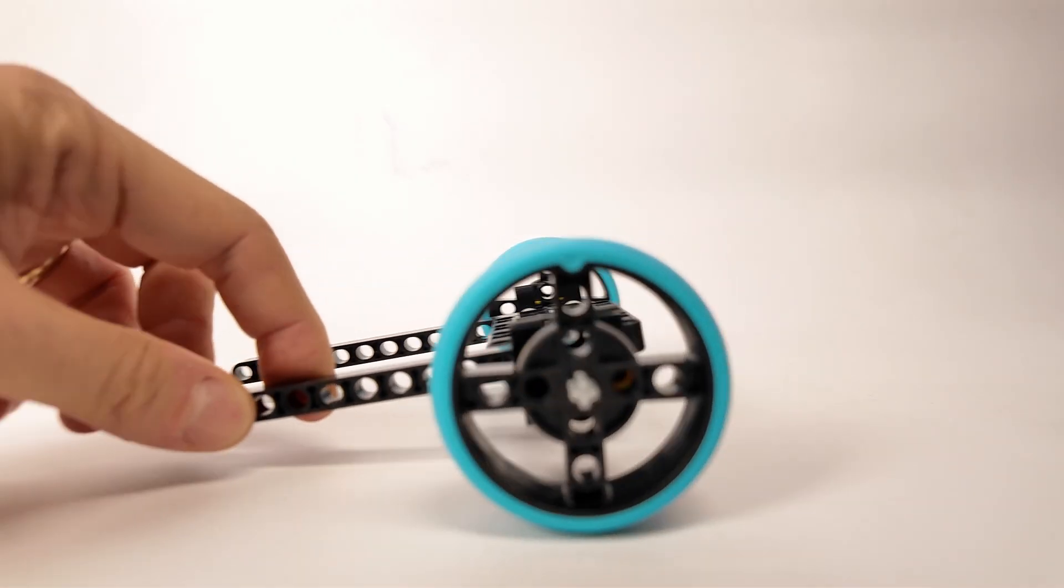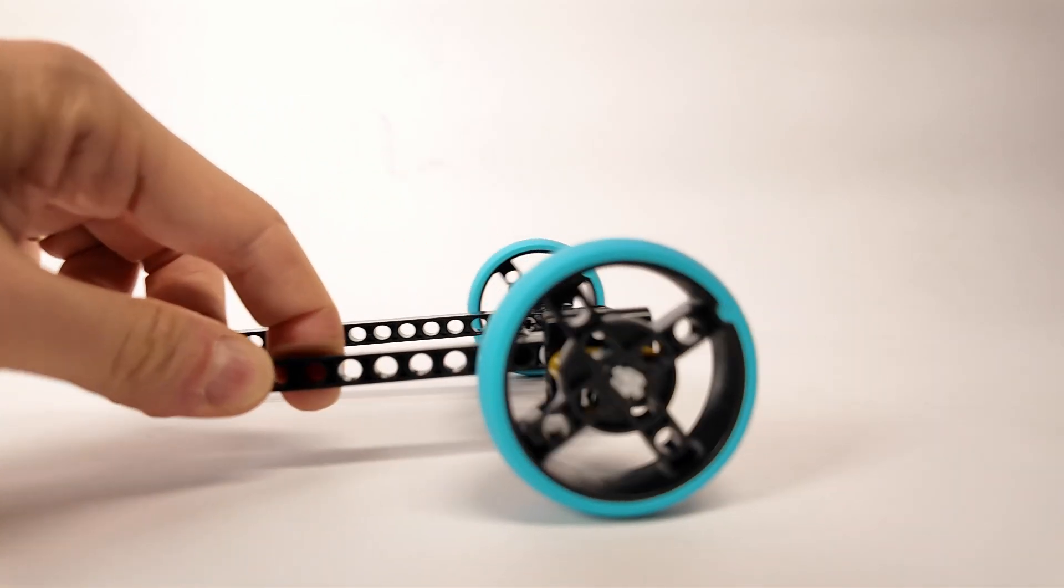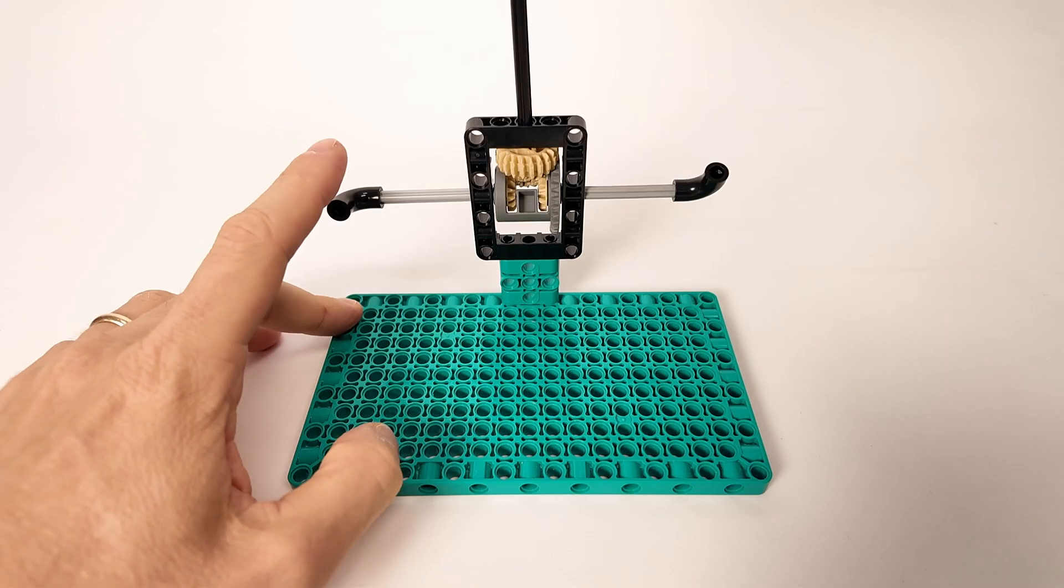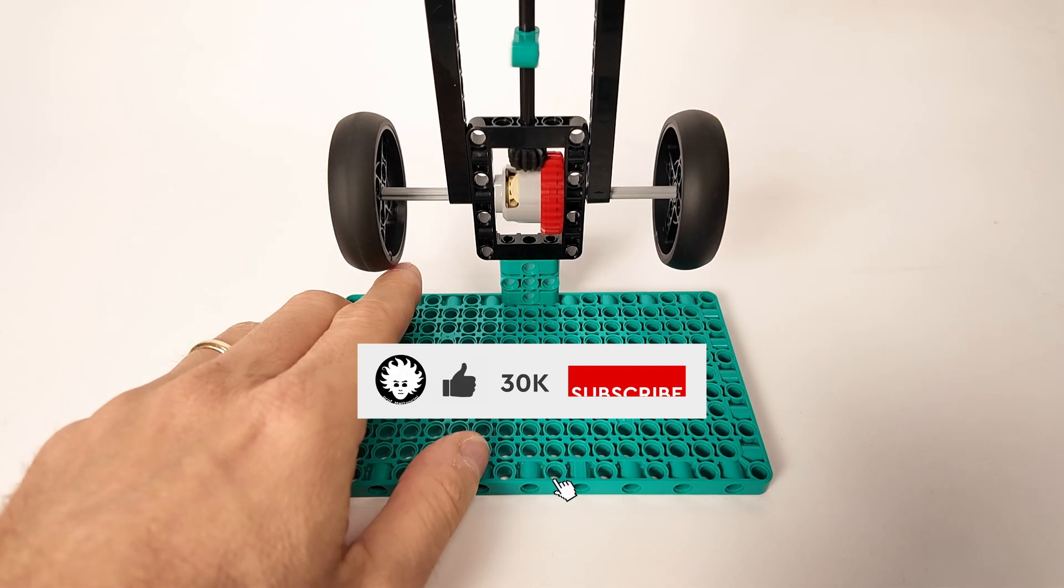The outside wheel has to spin faster. That's where a clever piece of engineering called the differential comes in. It lets each wheel spin at its own speed, so the car wheels don't skid when traveling along a curve. Too bad, the Spike Prime set doesn't include the differential.